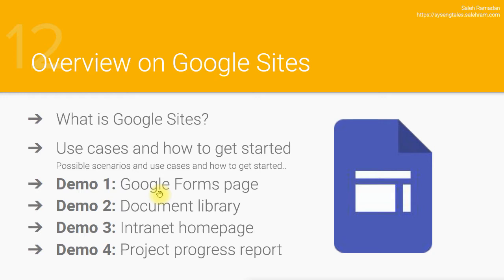This is going to be an externally accessed site, so the publishing will be set to public or anyone with the link. I'll create a basic registration form for an event, link an answer sheet with it, submit one or two test answers to get some data, and then use that data to create a couple of charts.